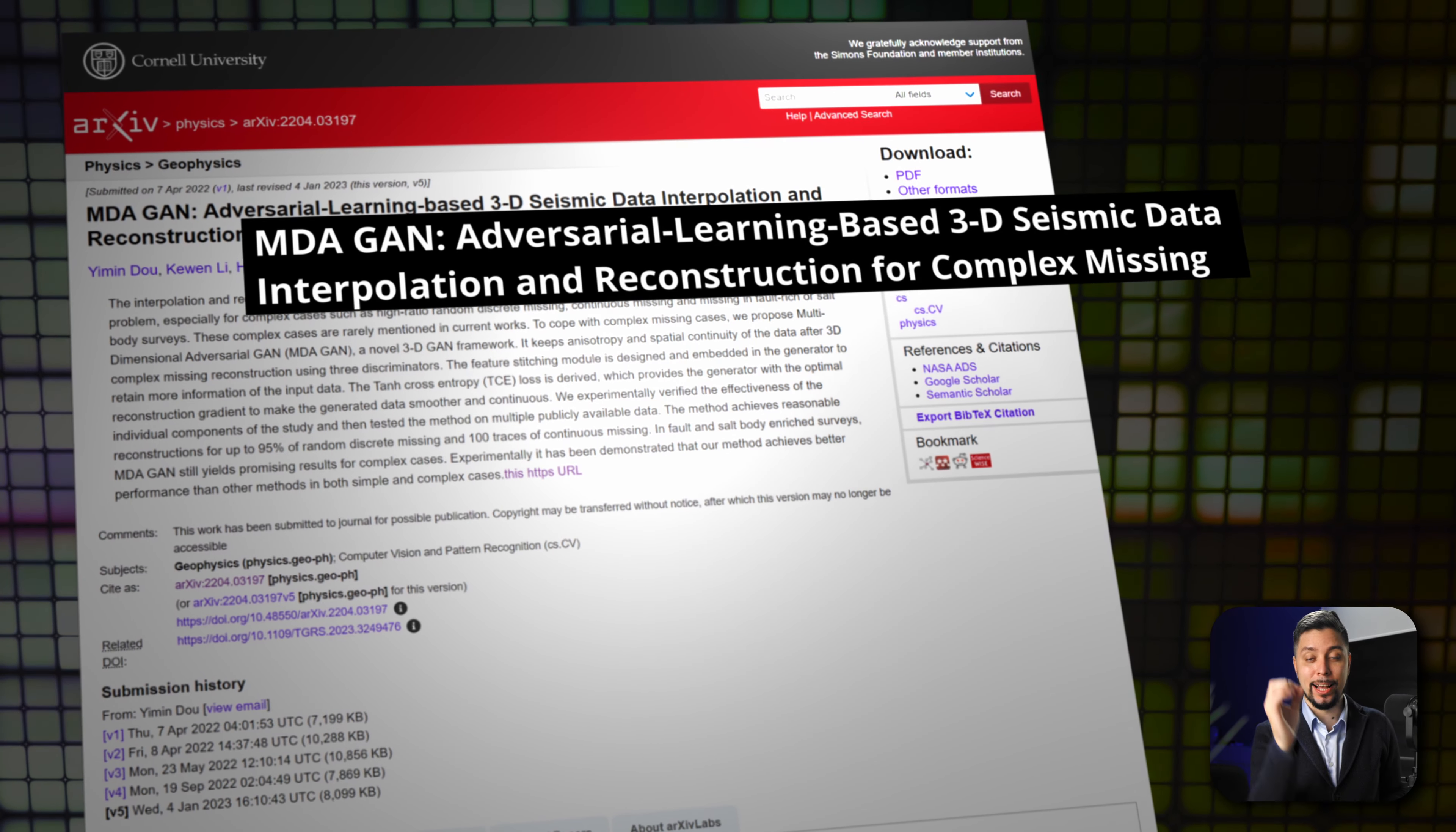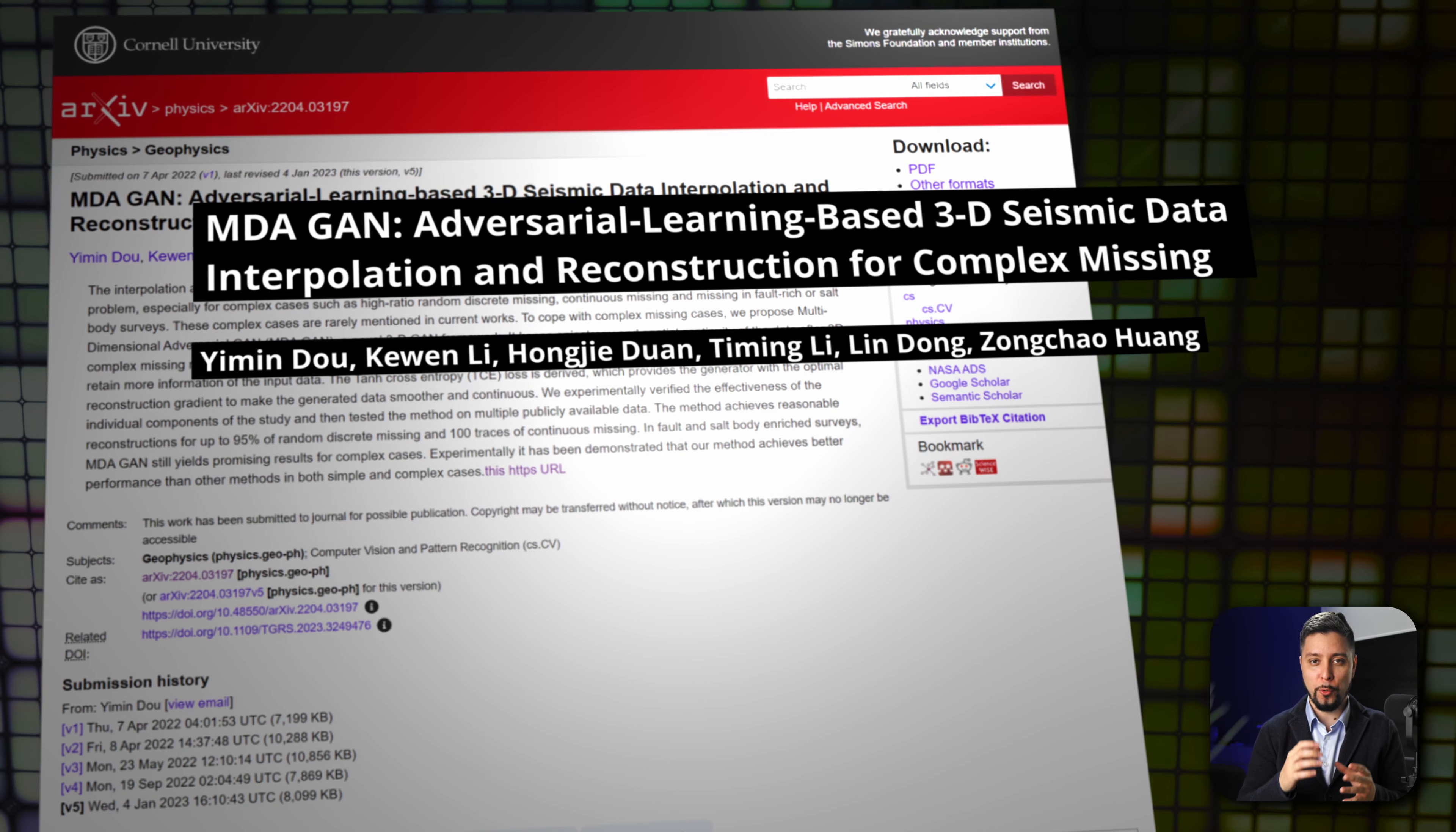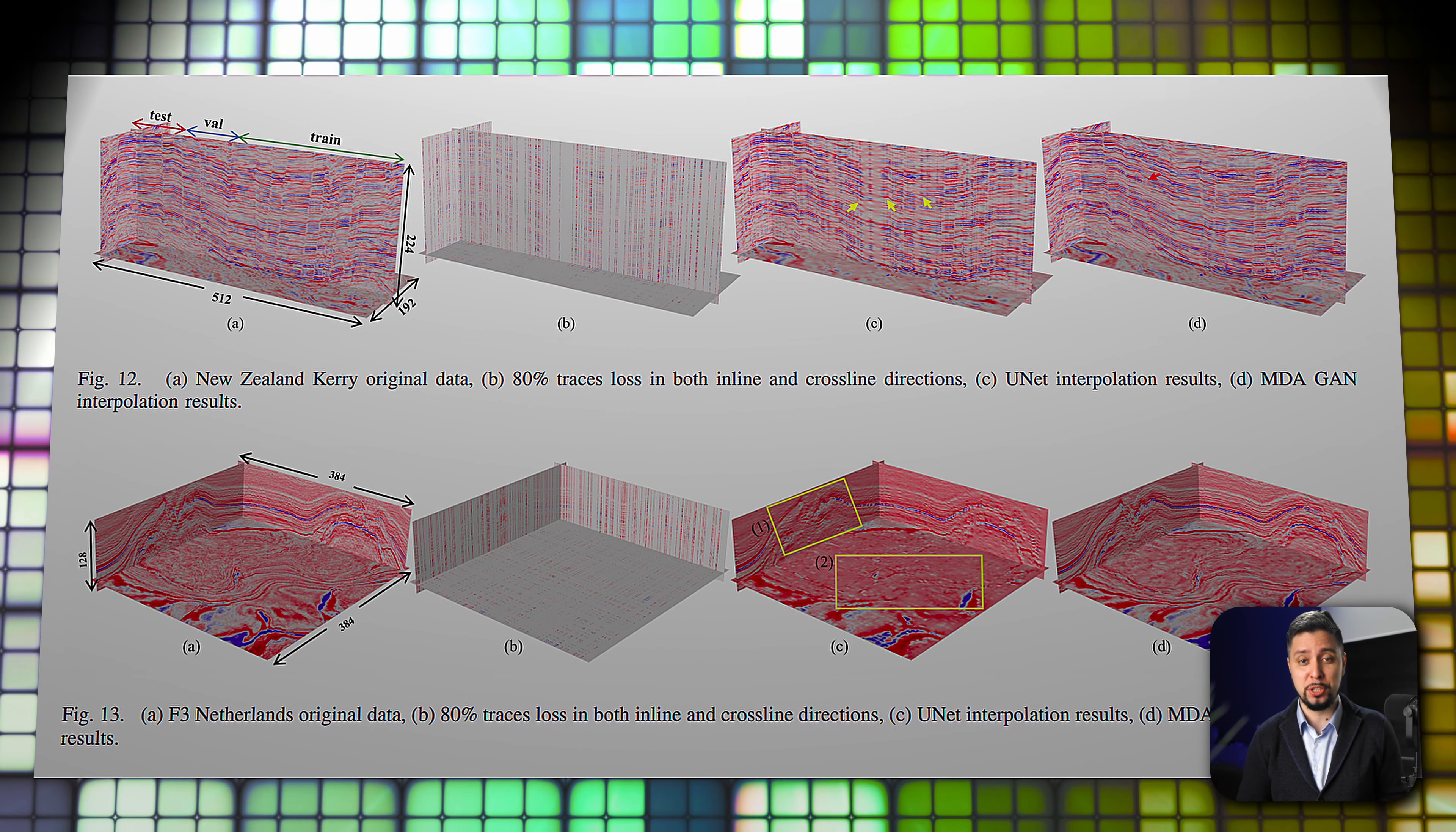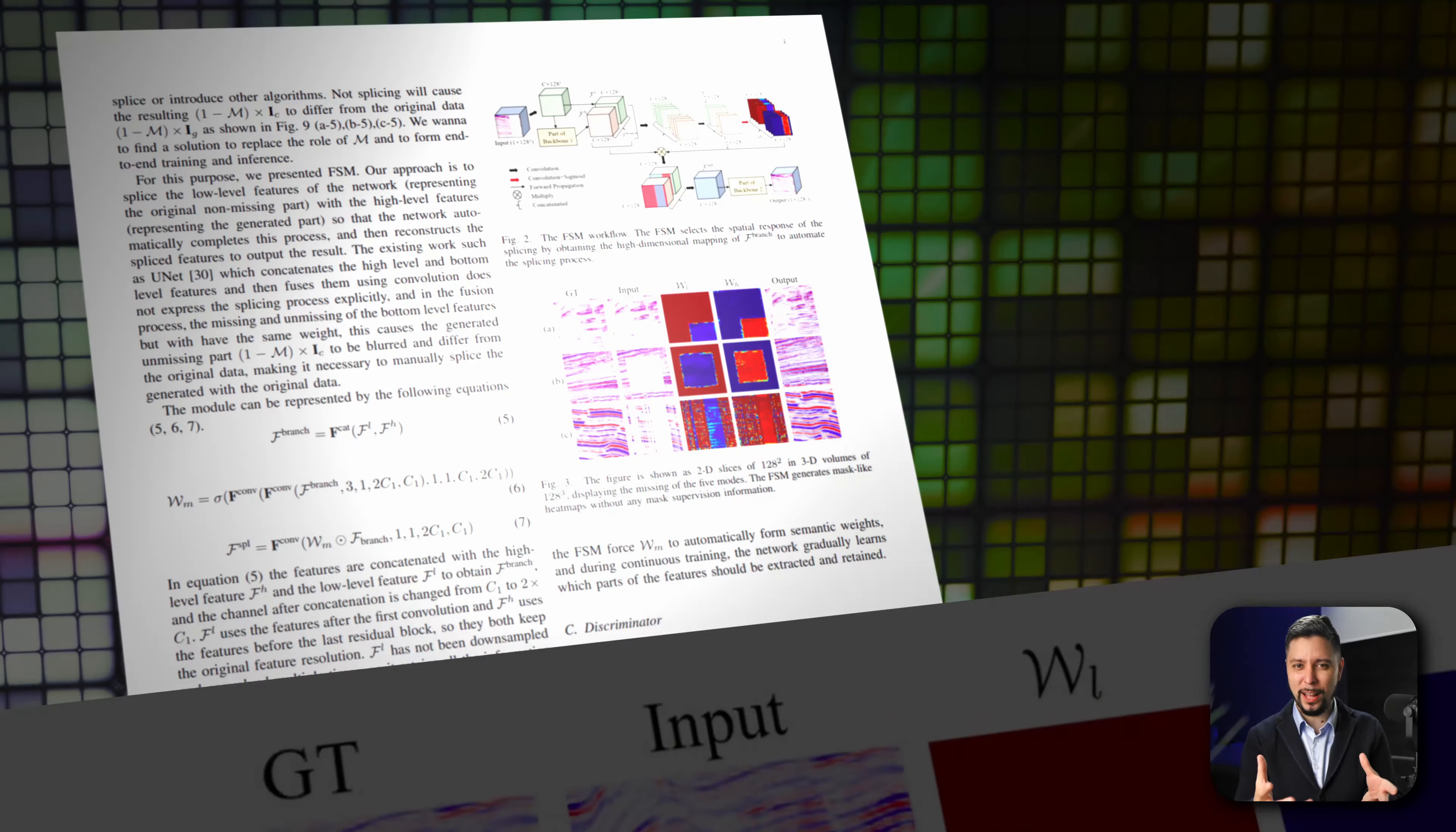This 3D MDA framework handles complex missing cases and maintains data anisotropy and spatial continuity after reconstruction. With three discriminators - yes, three - a feature splicing module, and the tanh cross-entropy loss function, MDA achieves smooth and continuous data reconstruction.